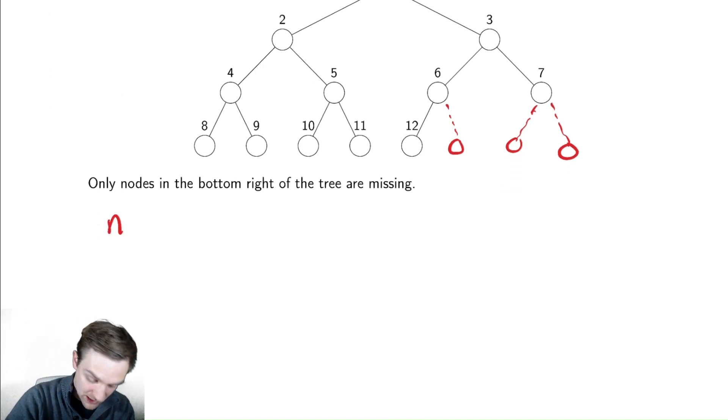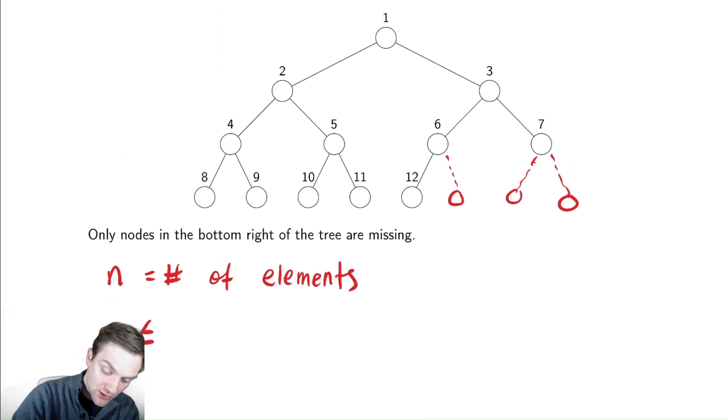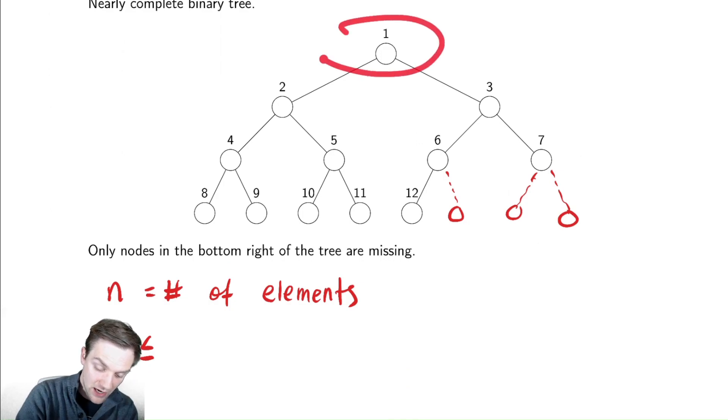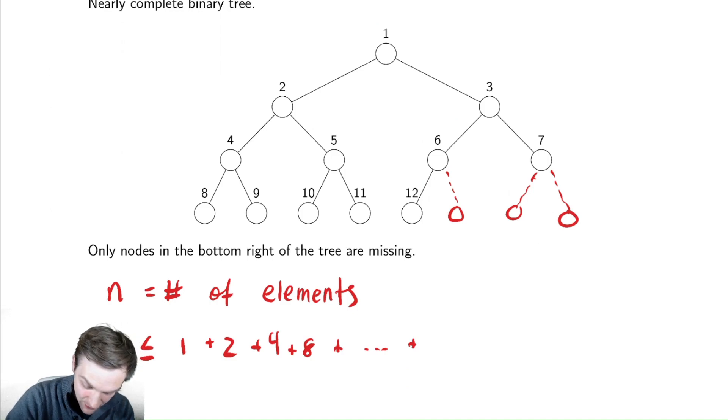I can bound this above. I'm going to count the number of elements level by level. On the root level there is one node. On the first child level there are two nodes. On the second child level there are four nodes, followed by eight nodes, followed by all the way up until the last level there are at most 2^h nodes on the level for the height. In this case the height of the tree was one, two, three, and there were at most eight nodes in that level.